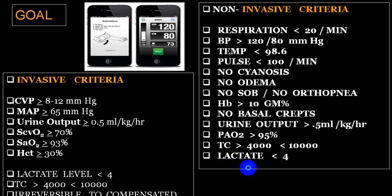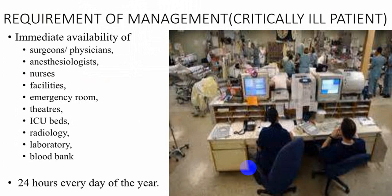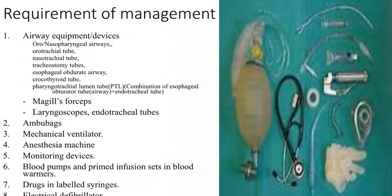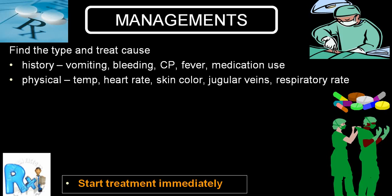For maintaining all those you require good facilities: surgeon, physician, anesthetist, nurse, emergency room, ICU bed, radiology, laboratory, blood bags — available 24 hours for the entire year, not just one or two days. Instruments required include airway equipment, ambu bag, mechanical ventilation, anesthetic machine, monitoring devices, pumps, drug-labeled syringes, and electrical defibrillators.